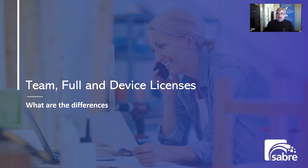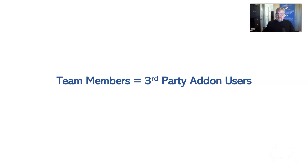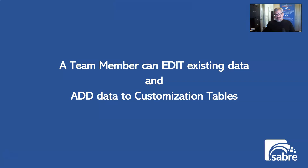Now let's talk about the difference between the team, full, and device licenses. There are three types of licenses. Once you've picked whether you want Essentials or Premium, now you're down to these license types. Team members — just think of team members as read-only. That's your safest bet. They can't really do much. The other way to think of team members is as the add-on third-party product add-on users. Team members can read and write from a fairly large number of add-on tables during their sessions, but they're read-only most everywhere else. Essentially, think of a team member as read-only.